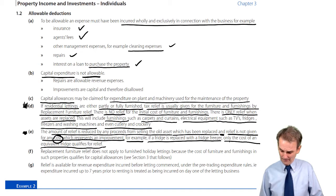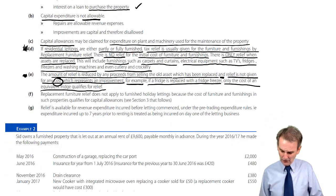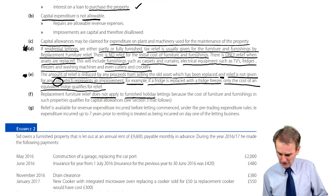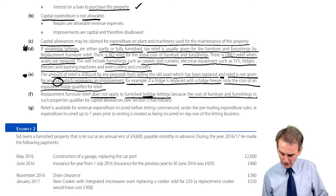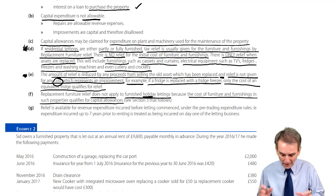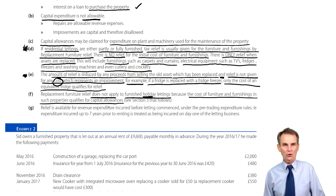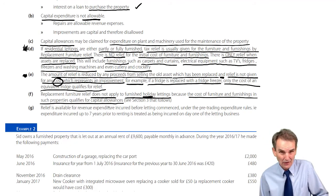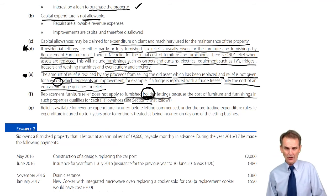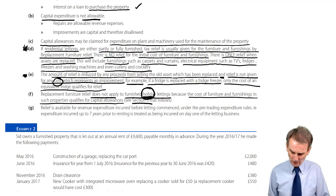Replacement furniture relief does not apply to furnished holiday lettings — a distinct category we'll deal with shortly. For furnished holiday lettings, the cost of furniture and furnishings qualifies for capital allowances instead, giving tax relief in that form on the plant and machinery acquired. Watch out: it's not furnished lettings in general — it is specifically furnished holiday lettings where these capital allowance rules apply.